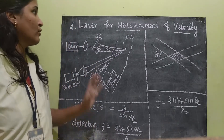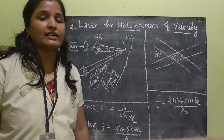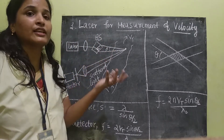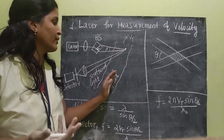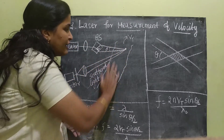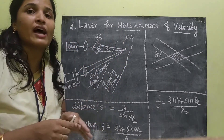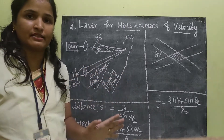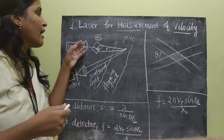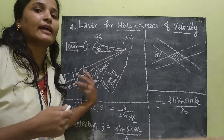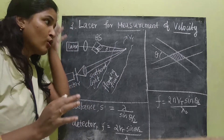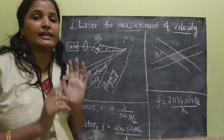Looking at the advantages of this type of measurement: there is no contact with the fluid. The device is not touching any of the fluid, so the flow is not disturbed. It is flowing and we are using laser to detect the velocity — there is no contact. That is one advantage.